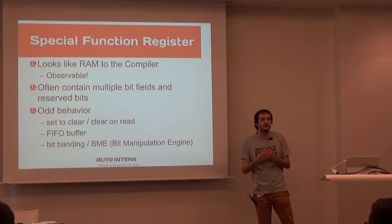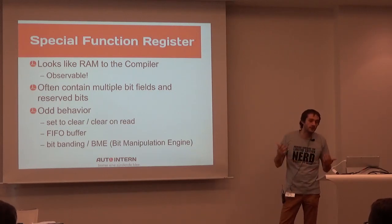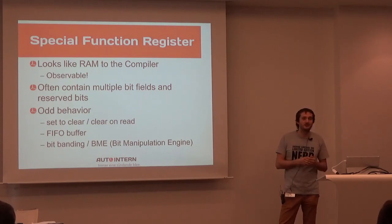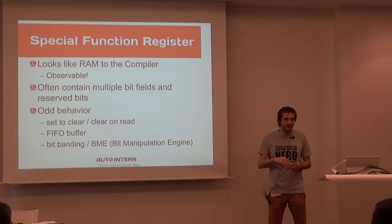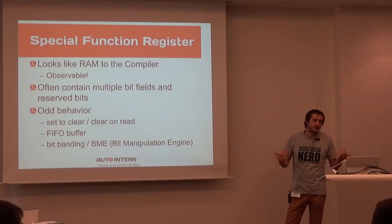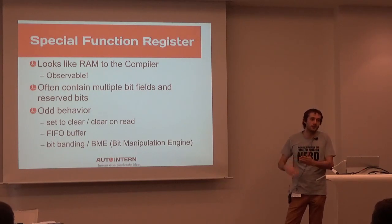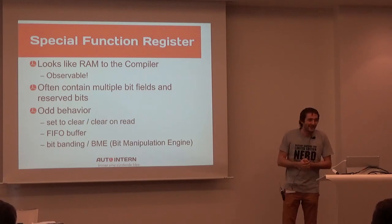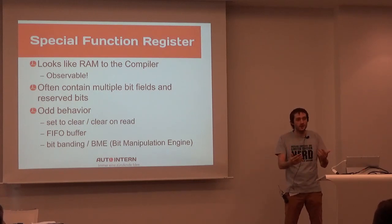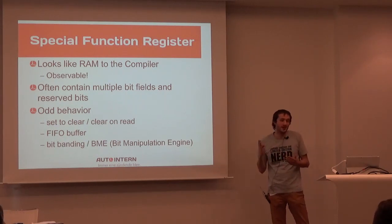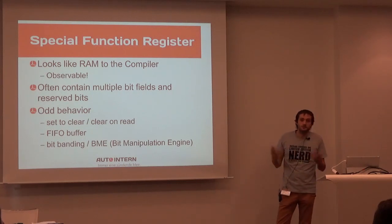So we're doing a lot of masking and shifting. We also have odd behavior — the hardware devs get creative and say, if you're reading interrupt flags, well, you're going to clear those, so they automatically clear them whenever you read it. Or there is set-to-clear, which is basically a mailbox: it's a bit you can't set. The hardware sets it, and you can clear it by writing one for some reason. We also have memory-mapped FIFO buffers, so if you're reading from this address twice, you'll get the first byte and then the second byte that came in over the UART. And we also have bit manipulation engines, which encode bit field data into the address.